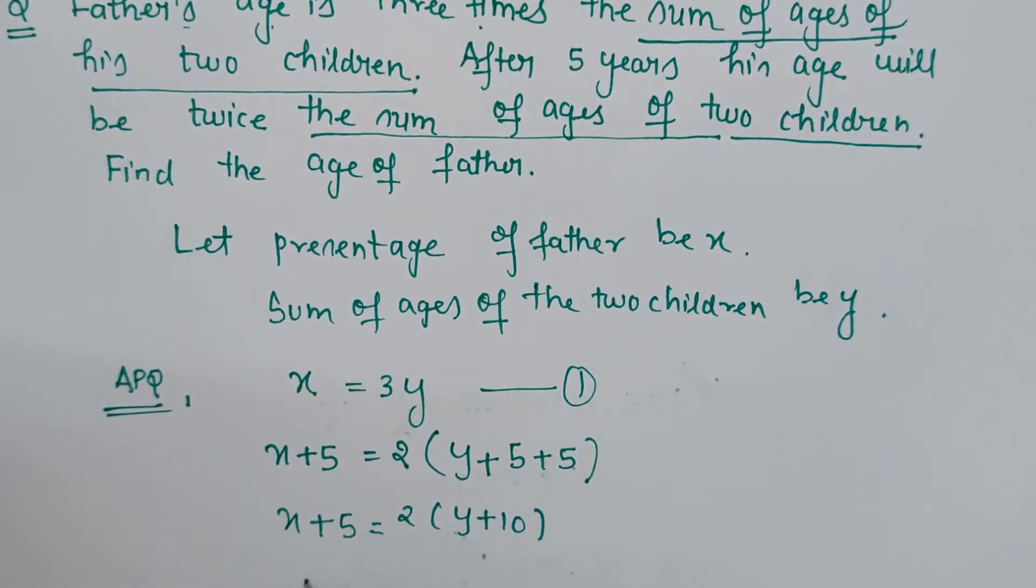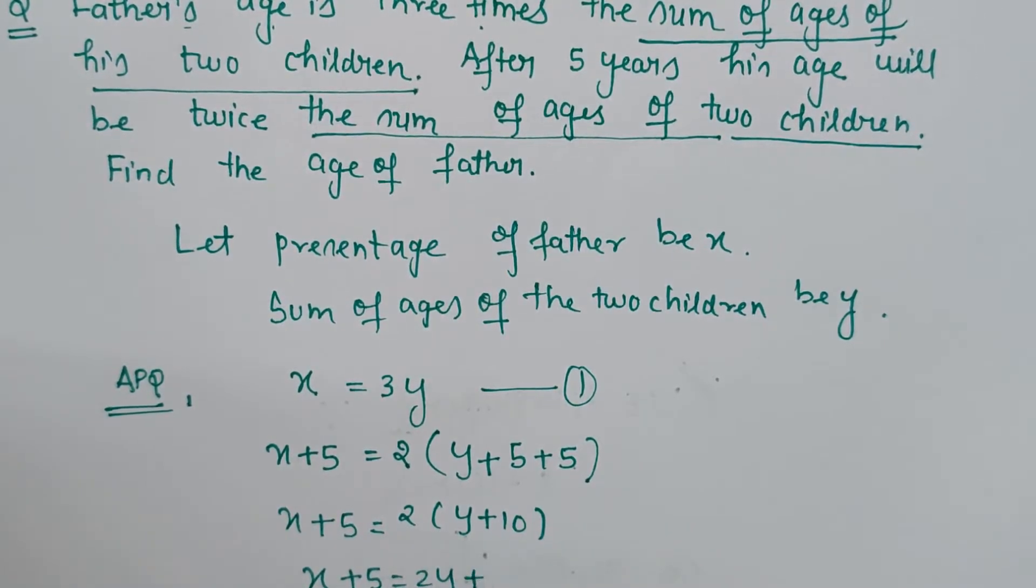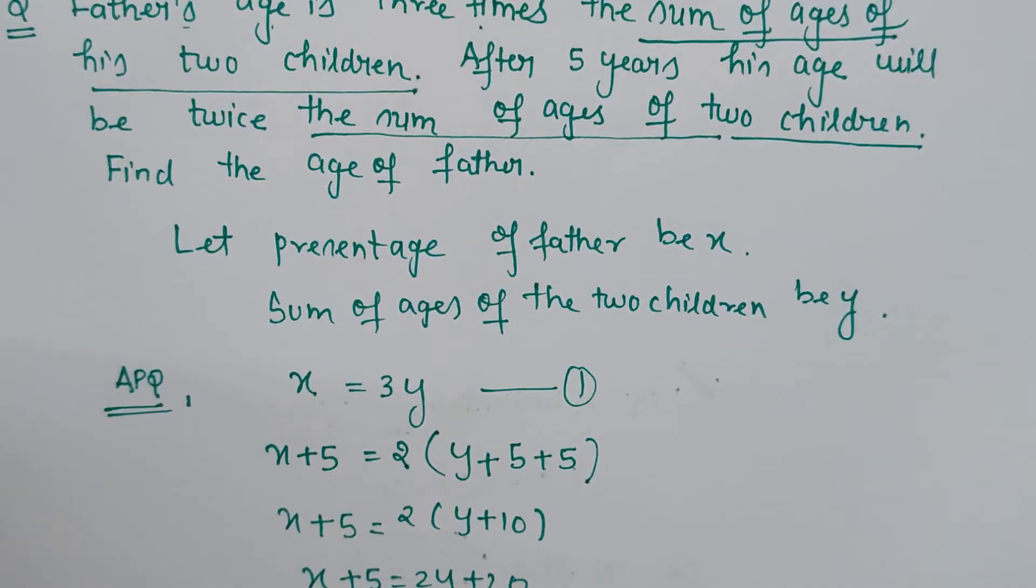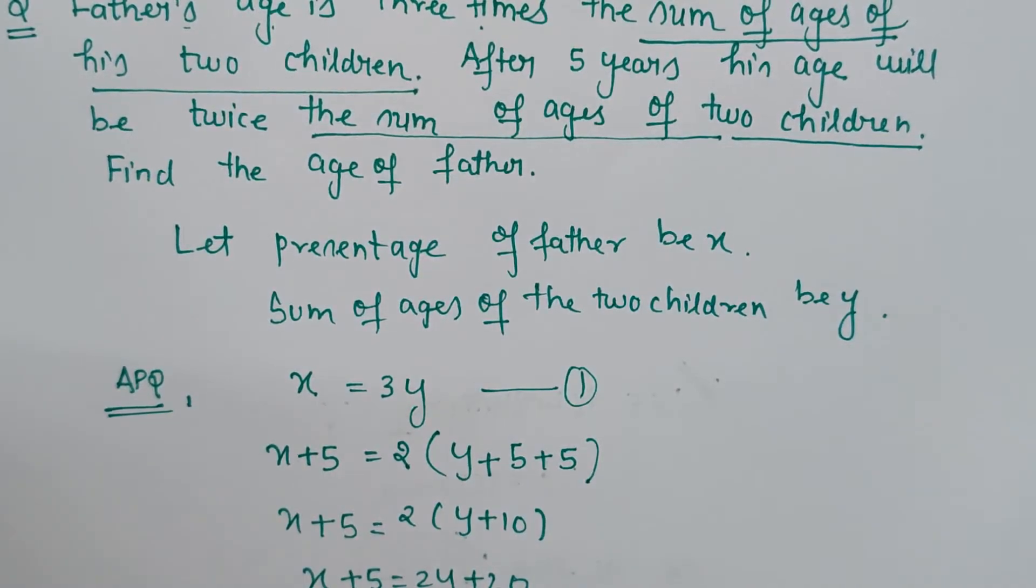Now let's simplify it. This gives x + 5 = 2y + 20. When we simplify, we get x - 2y = 15. So this is my second equation, and this is my first equation.